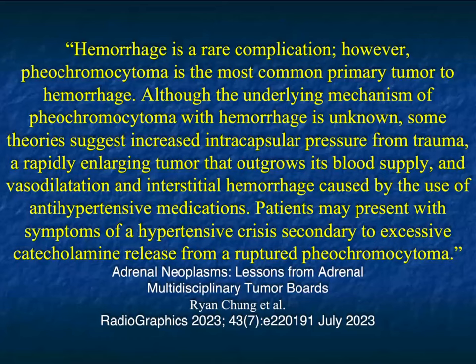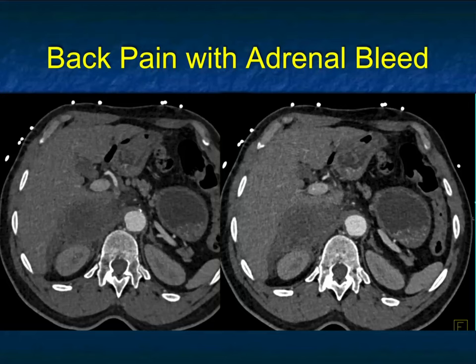Hemorrhage can be within a tumor, with pheos being the most common primary tumor to bleed. Hemorrhage is also something we think about with anticoagulant therapy and trauma. But let's talk about tumors more than anything else.